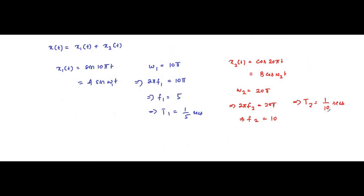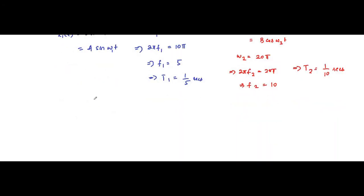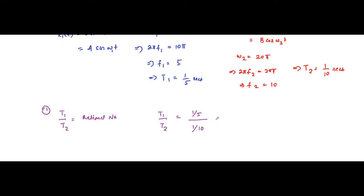Here T1 is 1/5 seconds and T2 is 1/10 seconds. Now, for two signals to be periodic, the ratio of their time periods should be a rational number — that is the first and most important condition. Here T1 divided by T2 is equal to (1/5) divided by (1/10), which equals 2. This is a rational number.